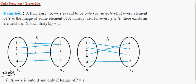Next, we move on to the second type: onto function, also called surjective. Only one-to-one functions are called injective; many-to-one functions are not injective. The definition of onto or surjective: a function is said to be onto or surjective if every element of Y is the image of some element of X under the function.